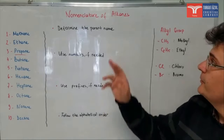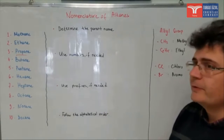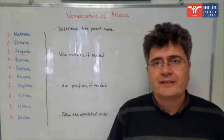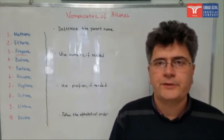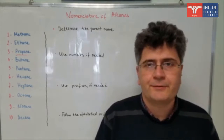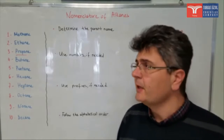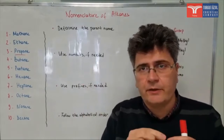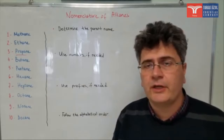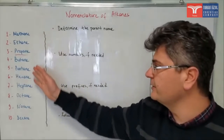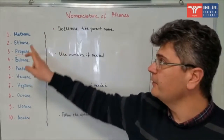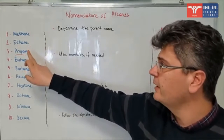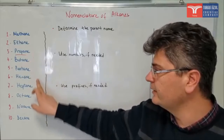Hello, in this video we're going to be talking about nomenclature of alkanes. In organic chemistry, each organic compound has a specific name, and in this video we'll be talking about these names. Let's start with the names of the alkanes. If you have unbranched, linear alkanes, what you need to do to name them is to learn these 10 names. If you have only one carbon atom, it's called methane; two carbon atoms, ethane; three carbon atoms, propane, and so on.